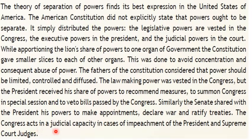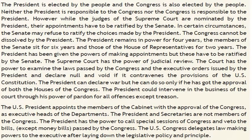The Congress acts in a judicial capacity in cases of impeachment of the President and Supreme Court judges. The President is elected by the people and the Congress is also elected by the people. Neither the President is responsible to the Congress, nor the Congress is responsible to the President. However, the judges of the Supreme Court are nominated by the President, and their appointments have to be ratified by the Senate. In certain circumstances, the Senate may refuse to ratify the choices made by the President.